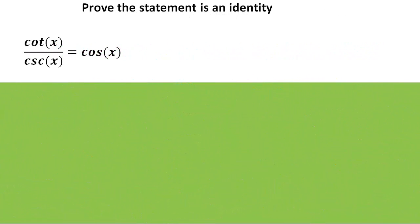Let's try to prove that this statement is an identity: the cotangent of x divided by the cosecant of x equals the cosine of x. It's a statement — we do not know it is an identity, so we cannot treat it like an equation. A good strategy here is to rewrite the cotangent and cosecant in terms of sine and cosine, working on the left side to make it look like the right side.